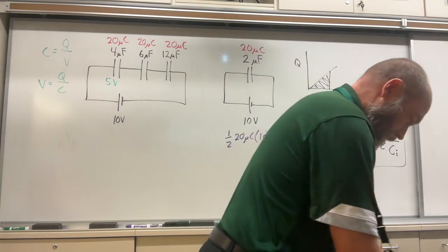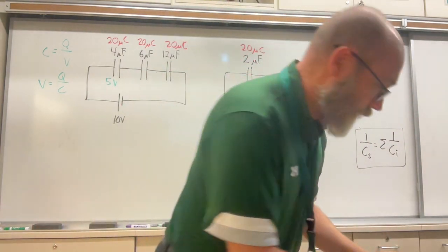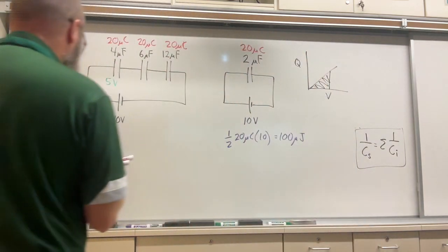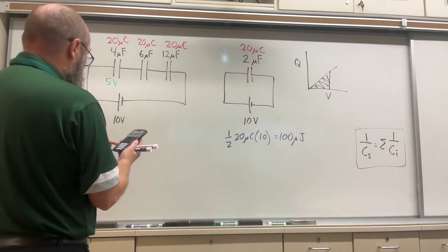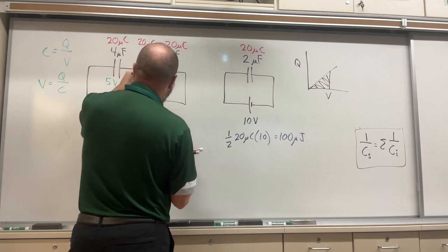If I take 20, hang on, I need my glasses. Sorry. All right. If I take 20 divided by 6, I get 3.33 volts.